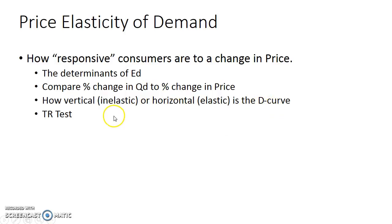One of the quick methods is the total revenue test. You look at the relationship between price and total revenue. If price and total revenue change in the same direction, the good is inelastic. If price and total revenue change in opposite directions, the good is elastic.